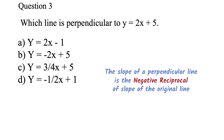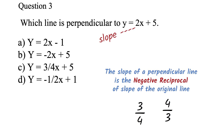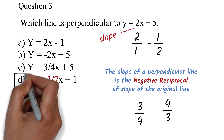The slope of a perpendicular line is the negative reciprocal of the slope of the original line. The reciprocal of a number is flipping the numerator and denominator, so the reciprocal of 3 over 4 is 4 over 3. Here the slope is 2, which is 2 over 1, so the reciprocal is 1 over 2 and the negative reciprocal is negative 1 over 2. Choice D has a slope of negative 1 over 2, which is the negative reciprocal of 2. Therefore it's perpendicular.